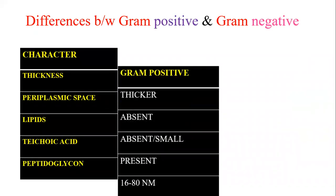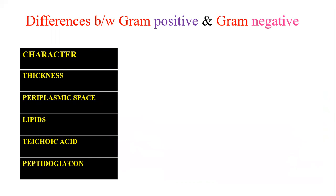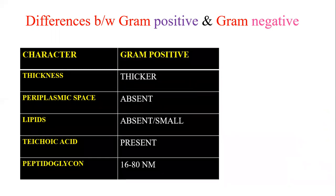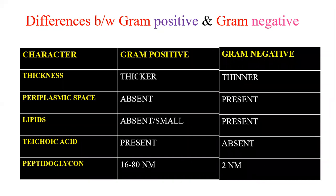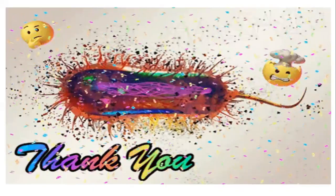In summary: gram positive bacteria have a thicker cell wall, gram negative have a thinner one. Periplasmic space is absent in gram positive but present in gram negative. Lipids are absent or minimal in gram positive but present in gram negative. Teichoic acids are present only in gram positive bacteria. Peptidoglycan is 16–80 nm in gram positive versus 2 nm in gram negative.